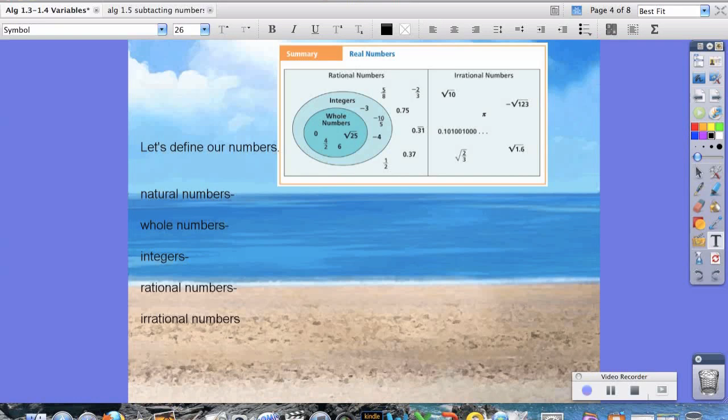So we're just going to define a couple numbers and we're going to use this image on the upper right hand corner to help us. So first of all, we have natural numbers. Now natural numbers, if I asked you to count, you would probably start off with 1, 2, 3, etc. So our natural numbers are the numbers that come naturally as we count them.